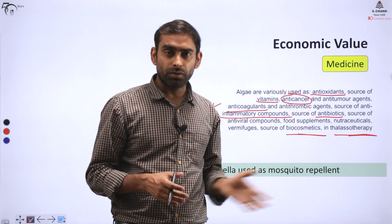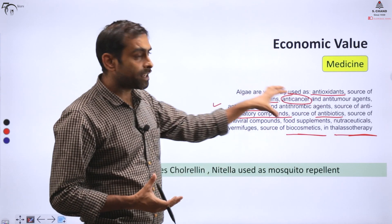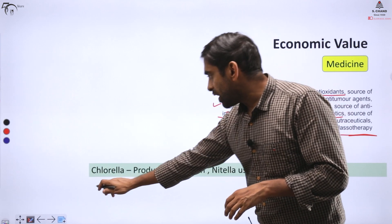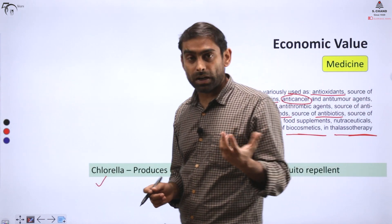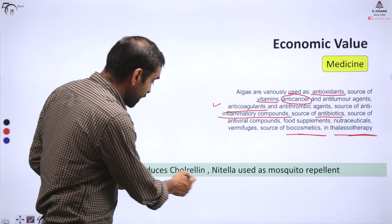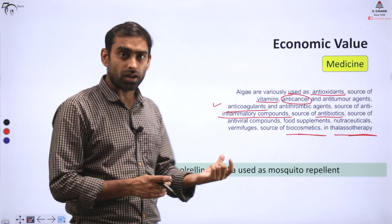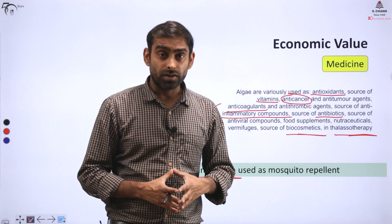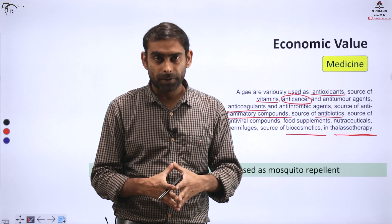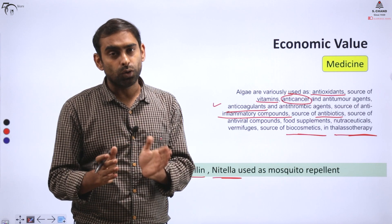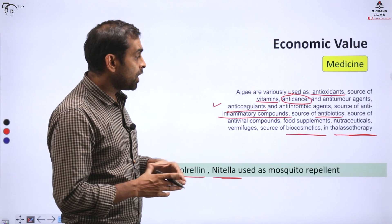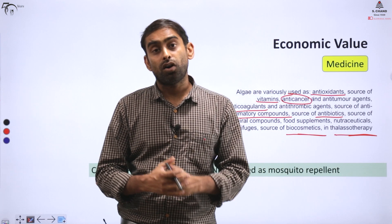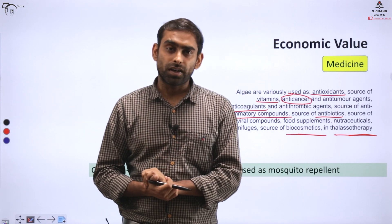Two specific noteworthy examples: chlorella produces a compound called chlorellin, which has potential medicinal applications. Apart from that, Nitella is used as a mosquito repellent. These were two important economic aspects of algae regarding food and medicine. We will further talk about industrial uses, bio-fertilizers, and research applications.